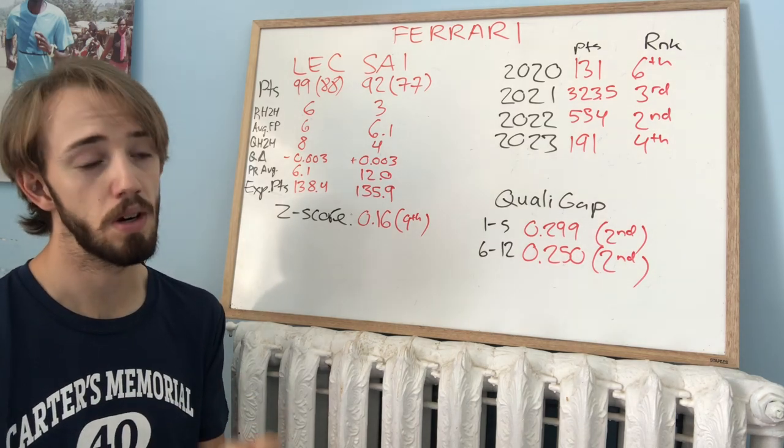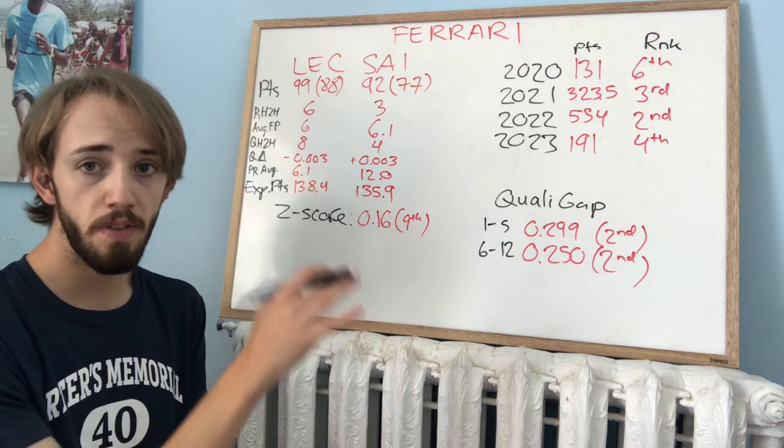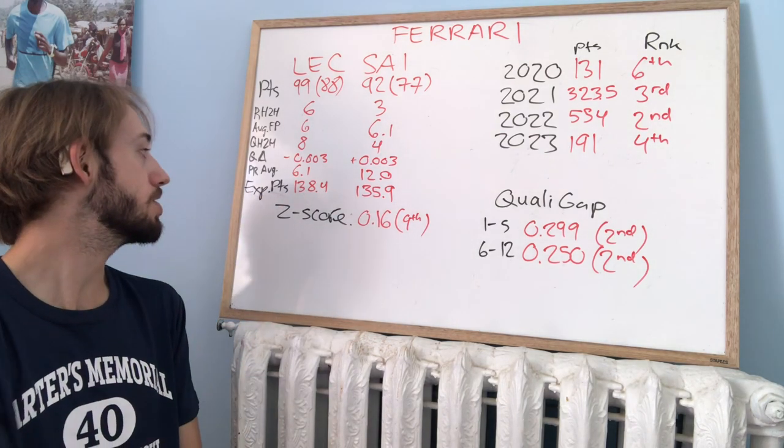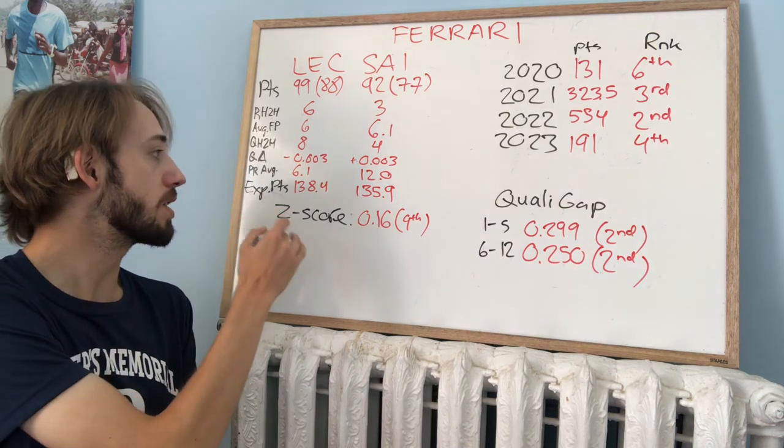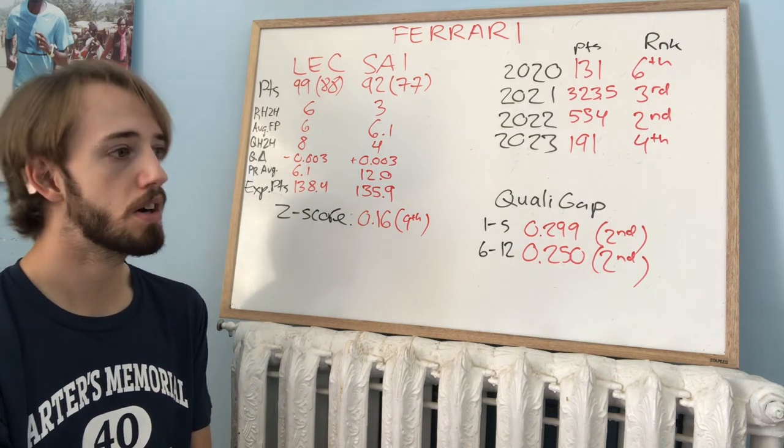Looking at expected points, if you're a Ferrari fan, it's probably best not to look at these numbers. 138.4 for Leclerc, 135.9 for Sainz. And these are based on start position.